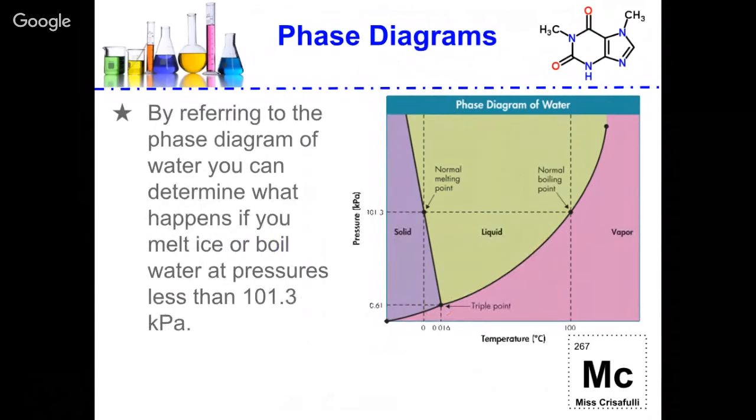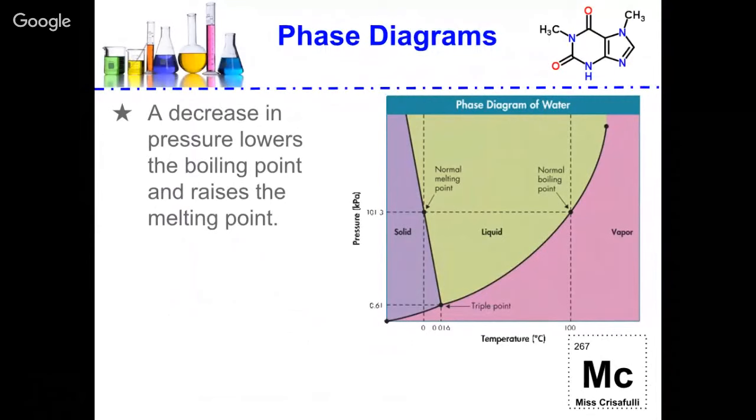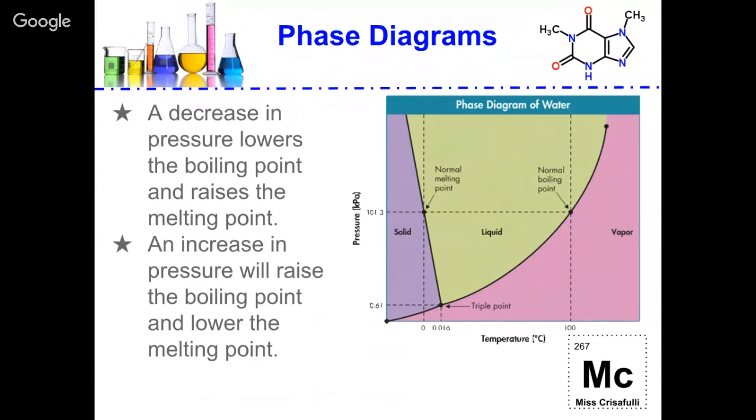By referring to the phase diagram of water, we can determine what happens if you melt ice or boil water at pressures less than 101.3 kPa, which is our standard pressure conditions. A decrease in pressure lowers the boiling point and raises the melting point. An increase in pressure will raise the boiling point and lower the melting point.